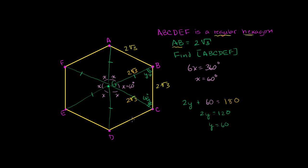We can use this to find the area of any one of these triangles and then multiply by 6. Let's focus on triangle GDC. We can drop an altitude, and since it's an equilateral triangle, we can show the two resulting right triangles are symmetric — both have 90-degree angles, two 60-degree angles, so the remaining angle must be 30 degrees. They share a side, so they're congruent. We can find this subslice area and multiply by 12, or just find the big triangle's area and multiply by 6.